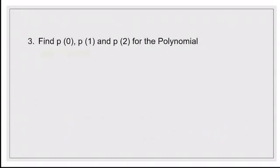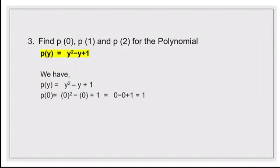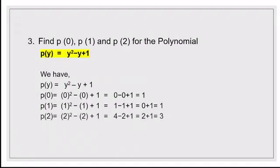Our next question: find p(0), p(1), and p(2) for the polynomial p(y) = y² minus y plus 1. What you are supposed to do is replace y by the given values. p(0) means replacing y by 0: 0² minus 0 plus 1 equals 1. p(1): 1² minus 1 plus 1 equals 1 minus 1 plus 1 equals 1. p(2): replacing y by 2 gives 2² minus 2 plus 1, which is 4 minus 2 plus 1 equals 3.